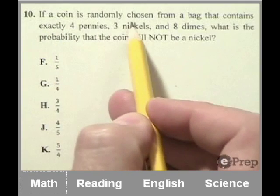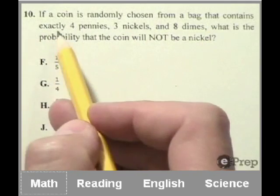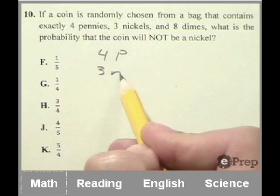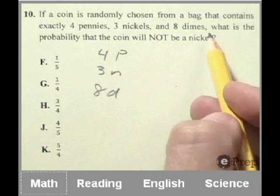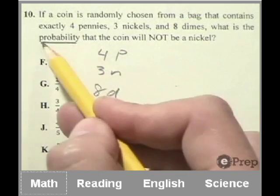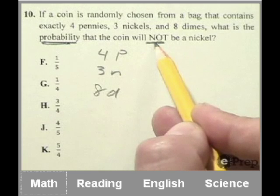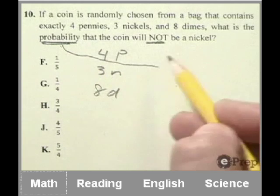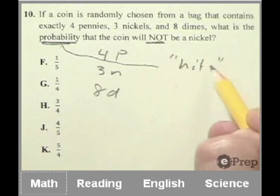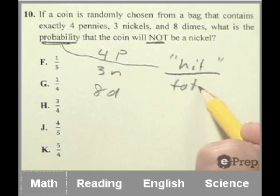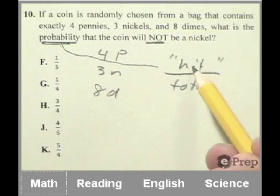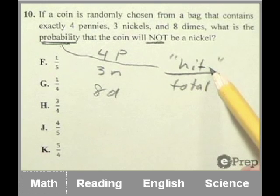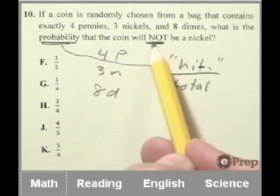If a coin is randomly chosen from a bag that contains exactly 4 pennies, 3 nickels, and 8 dimes, what is the probability that the coin will not be a nickel? All right, so whenever I hear the word or see the word probability, I think the hit over the total.